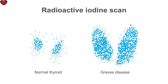On radioactive iodine scan, patients with Graves' disease will show markedly increased uptake due to the high levels of thyroid hormone being produced, and the uptake will be diffuse due to the stimulation of the entire thyroid gland by the TSH receptor antibodies.